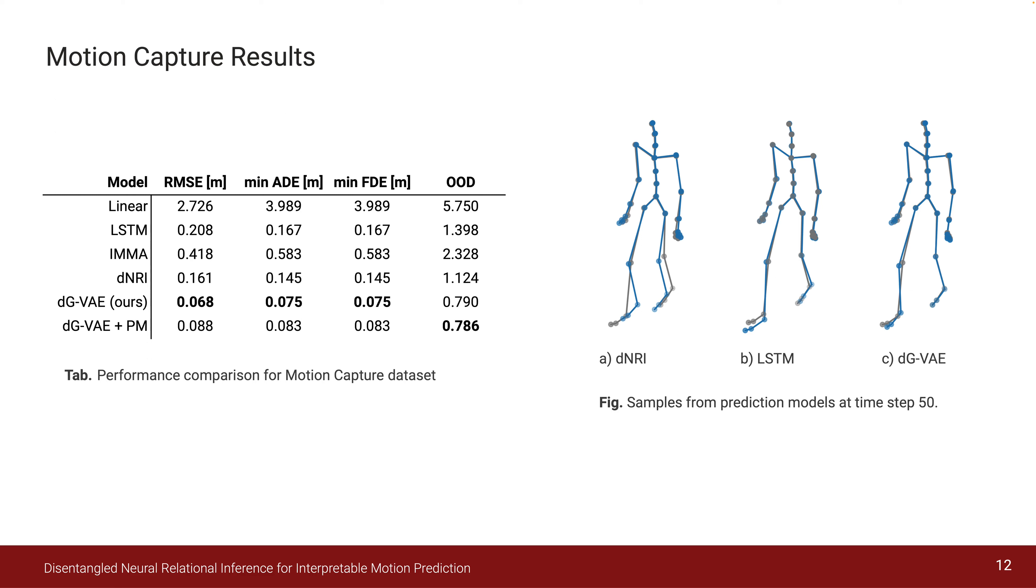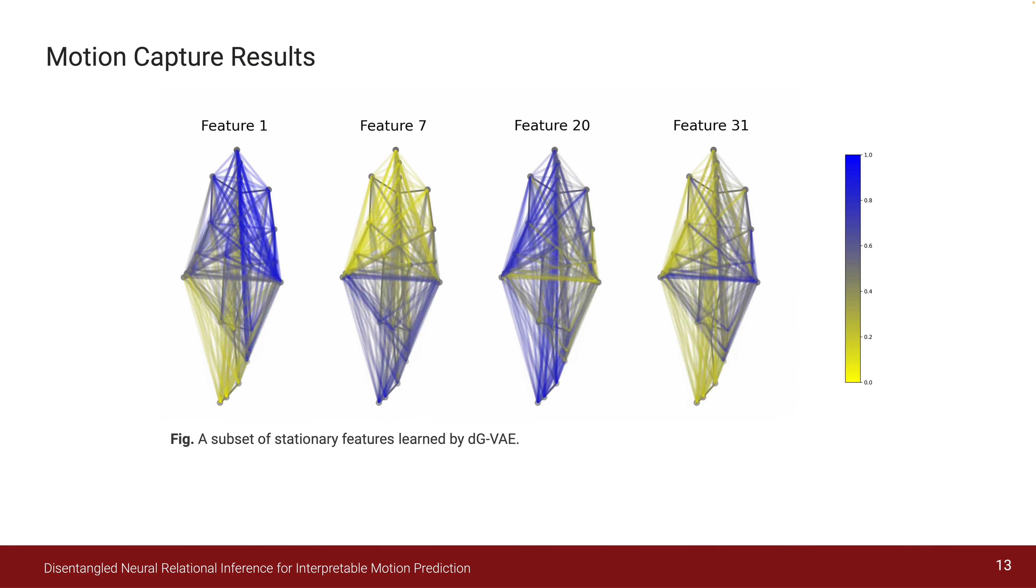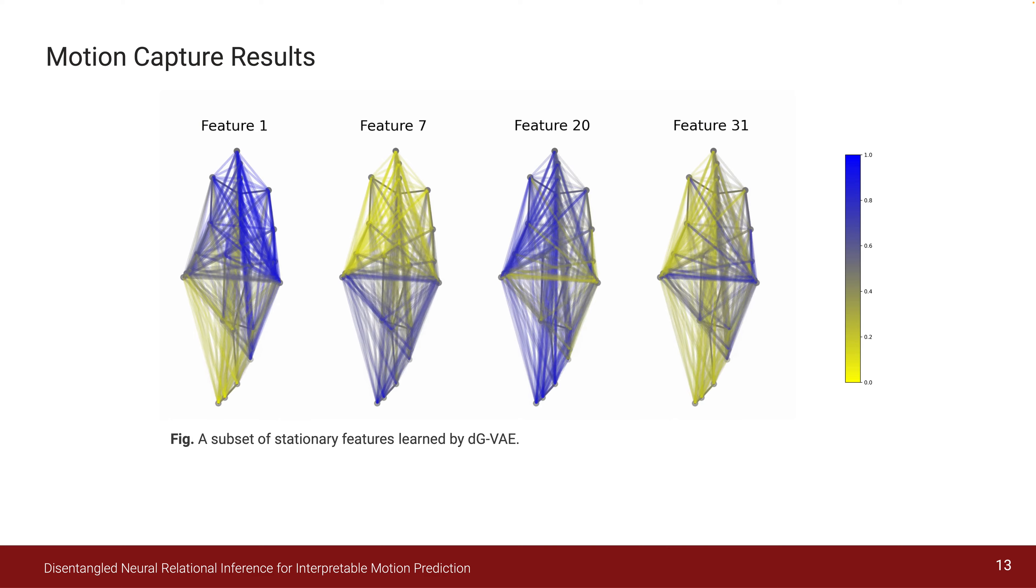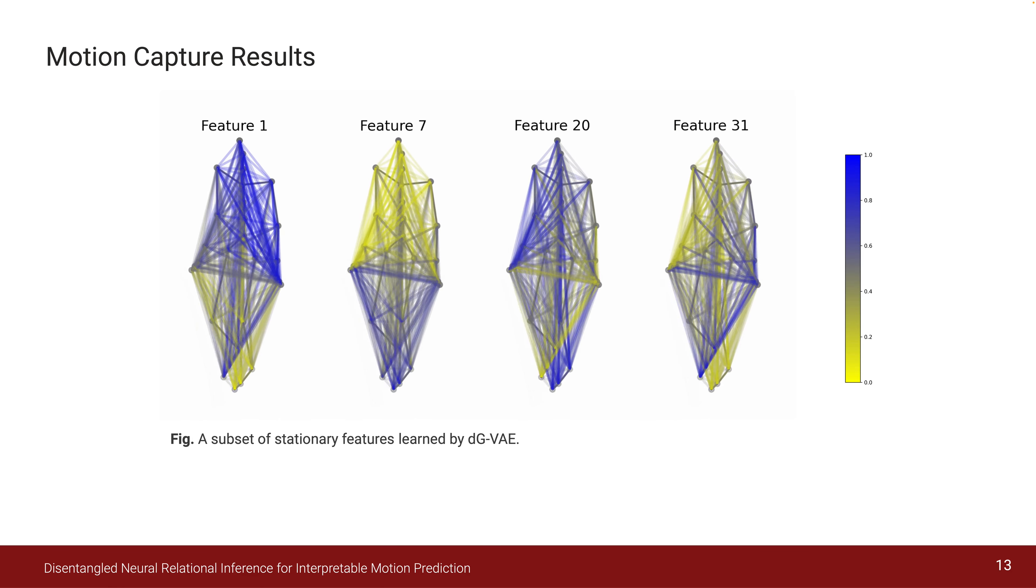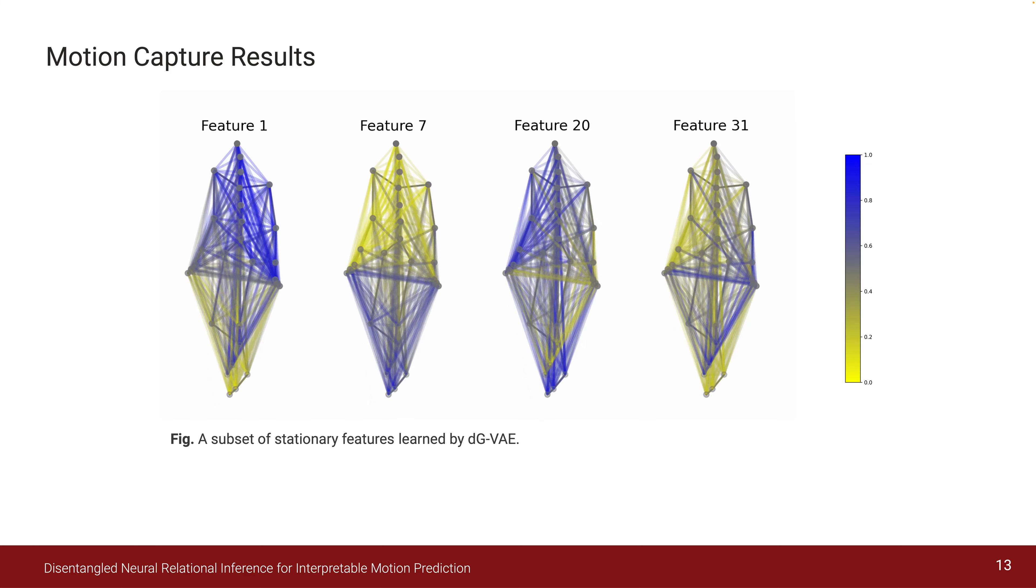We notice that our method matches the longer prediction much closer than DNRI and LSTM, especially around the legs and feet. While disentanglement appears to not significantly affect performance quantitatively in this example, it still introduces a new level of expressivity.